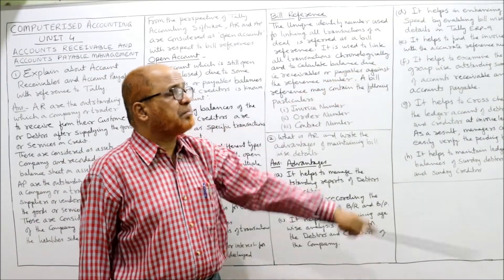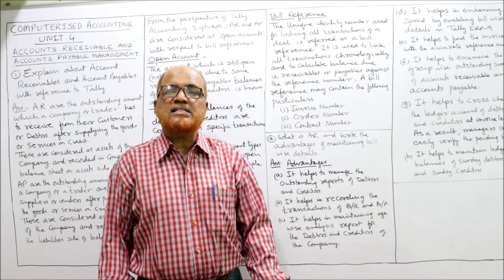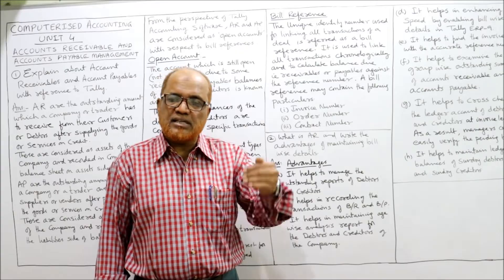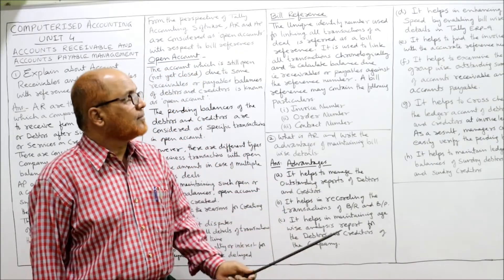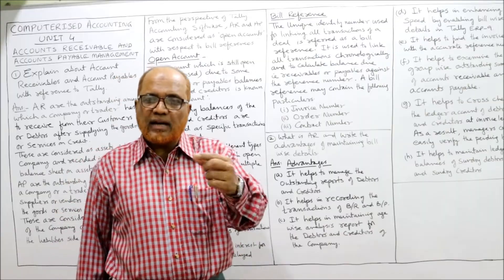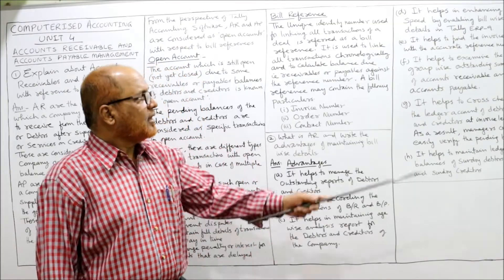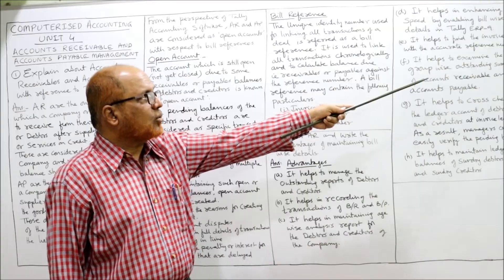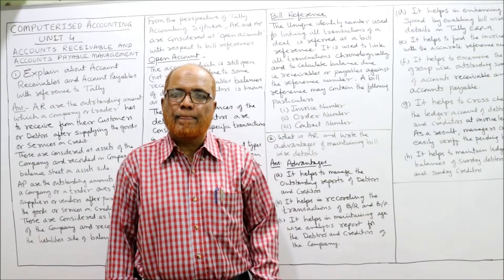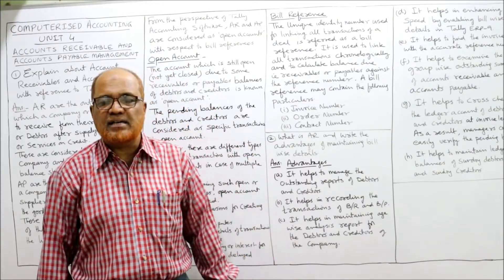The fourth advantage is that it helps enhance and accelerate the inflow of cash from receivables using Tally ERP 9. The fifth advantage is that it helps find any invoice with an accurate reference number, allowing retrieval of complete invoice details. The sixth advantage is that it helps examine group-wise outstanding summaries of account receivable and account payable.